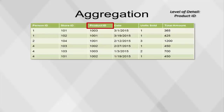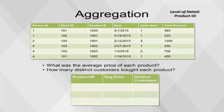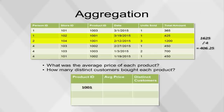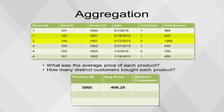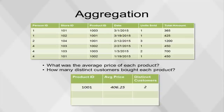Aggregating at the product level of detail can answer basic questions about each product, such as what was the average price of each product, and how many distinct customers bought each product? Starting with product ID 1001, average price is calculated as the sum of the total amount (1625) divided by the sum of units sold (4), giving a final value of $406.25 populated into the resulting table. Be aware that using an average function in this case would not give the expected result. Distinct customers is calculated by counting the distinct number of person IDs for product ID 1001 — there are two: person ID 1 and person ID 2.